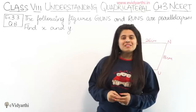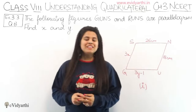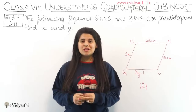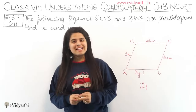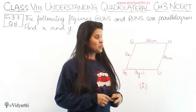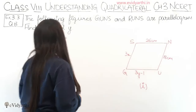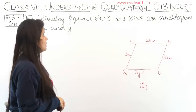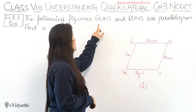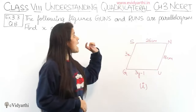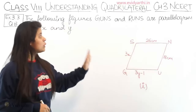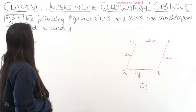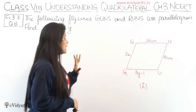Hello everyone, this is Manzi from Irinjati.in. Now we are starting with question number 8, exercise 3.3. In this question we have the following figures — GUNS and RUNS — which are parallelograms, and we need to find X and Y.